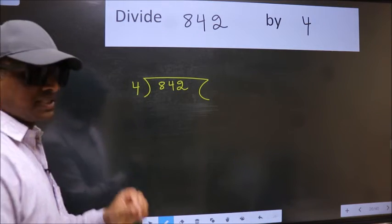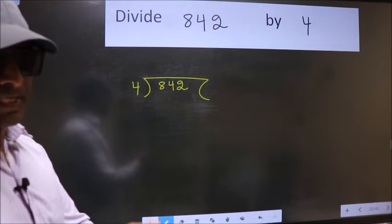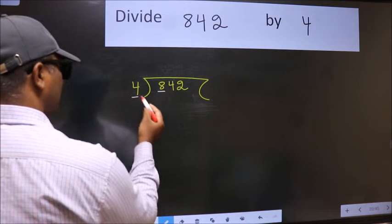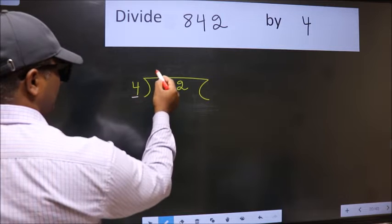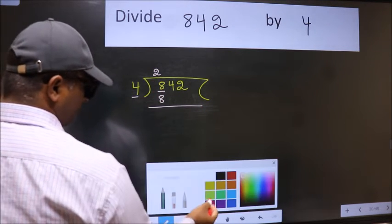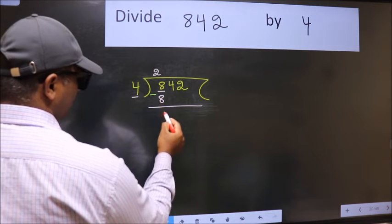This is your step 1. Next, here we have 8 and here 4. When do we get 8 in 4 table? 4 times 2 is 8. Now we should subtract. We get 0.